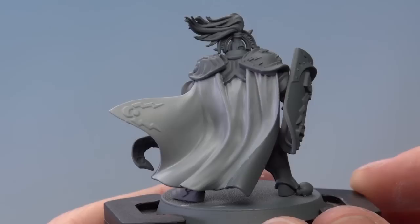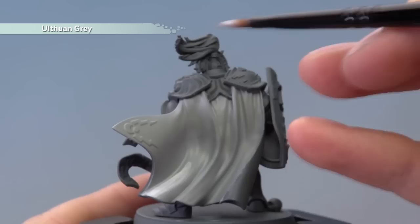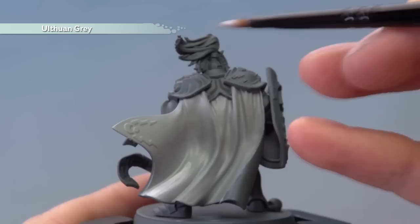With that base coat done, we're now ready to apply a layer of Ulthuan Grey onto the cloak. Now I'm going to apply this over almost all of it, except for the very deepest recesses. For example, just that little recess down there, you can see I'm going very close to the base of it, but not quite all the way, and once again with this color I will be applying two thin coats.